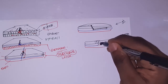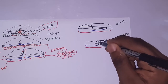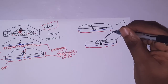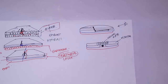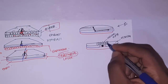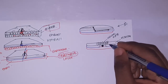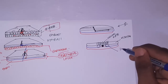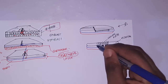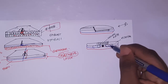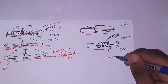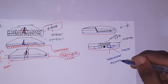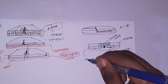The importance of the notochord is that it stimulates the overlying ectoderm to differentiate into what we call the neural plate or neural crest. It also stimulates the mesodermal layer to differentiate into specialized structures: the region closest to the notochord becomes the somite, the next region becomes the intermediate mesoderm, and the outermost region becomes the lateral plate mesoderm.